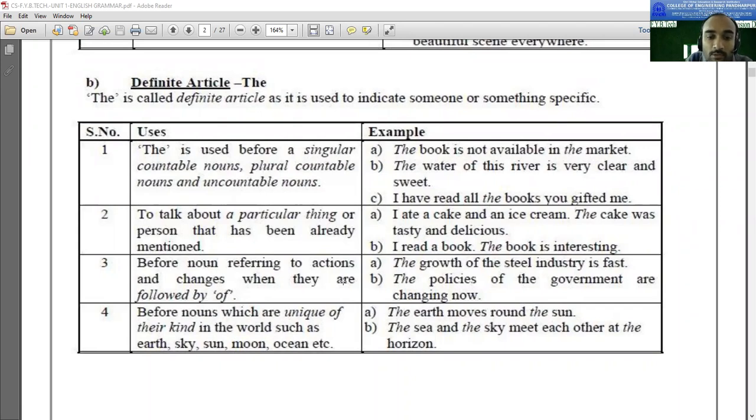The third use is before nouns referring to actions and changes when they are followed by 'of'. For example, the growth of the steel industry is fast. Here, 'the growth' - growth is a noun, and that changes when they are followed by 'of'. That's why we are using here 'the growth of the steel industry is fast'.